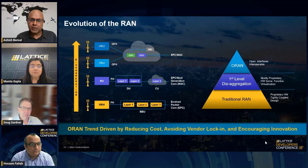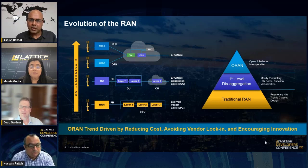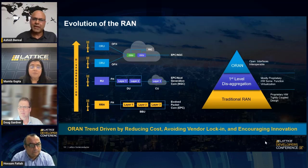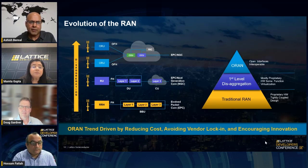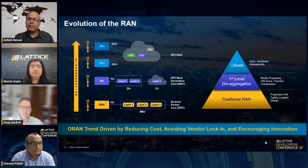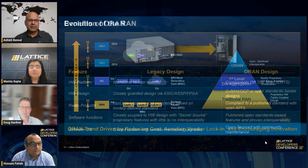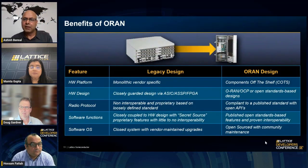Let's look at the evolution of the RAN. We started with the traditional RAN — all one black box, proprietary hardware coupled with software in one big box. Then we saw the first level of disaggregation, where it was virtualized — still the same vendor but software and hardware were decoupled. The biggest disruption in any wireless technology is ORAN — open RAN — which opens up and makes interfaces interoperable, bringing best-in-breed solutions to avoid vendor lock-in, encourage innovation, and drive down cost.